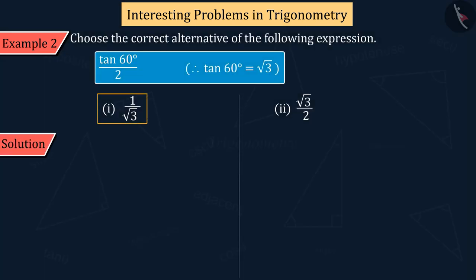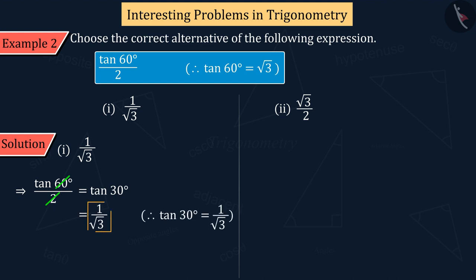If you have chosen the first option, then it is a good try, but this is the wrong answer. Here, we are given tan 60 degrees in numerator and 2 in denominator. While solving this question, some children divide angle 60 by 2 and write the value of tan 30 degrees, which is the wrong answer.